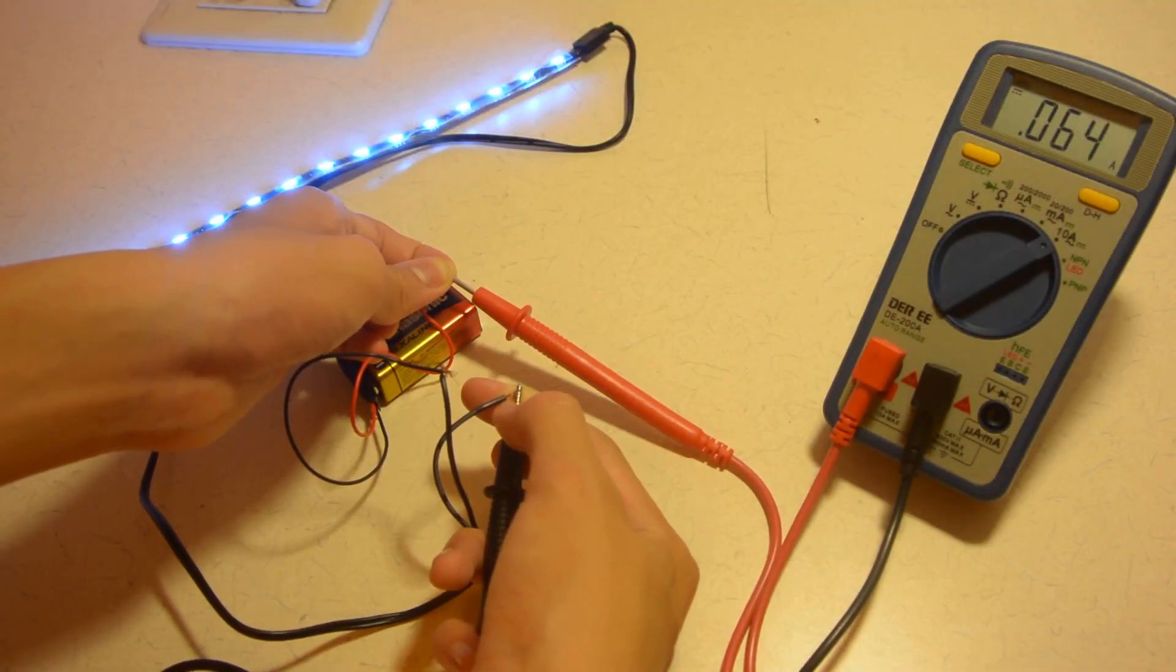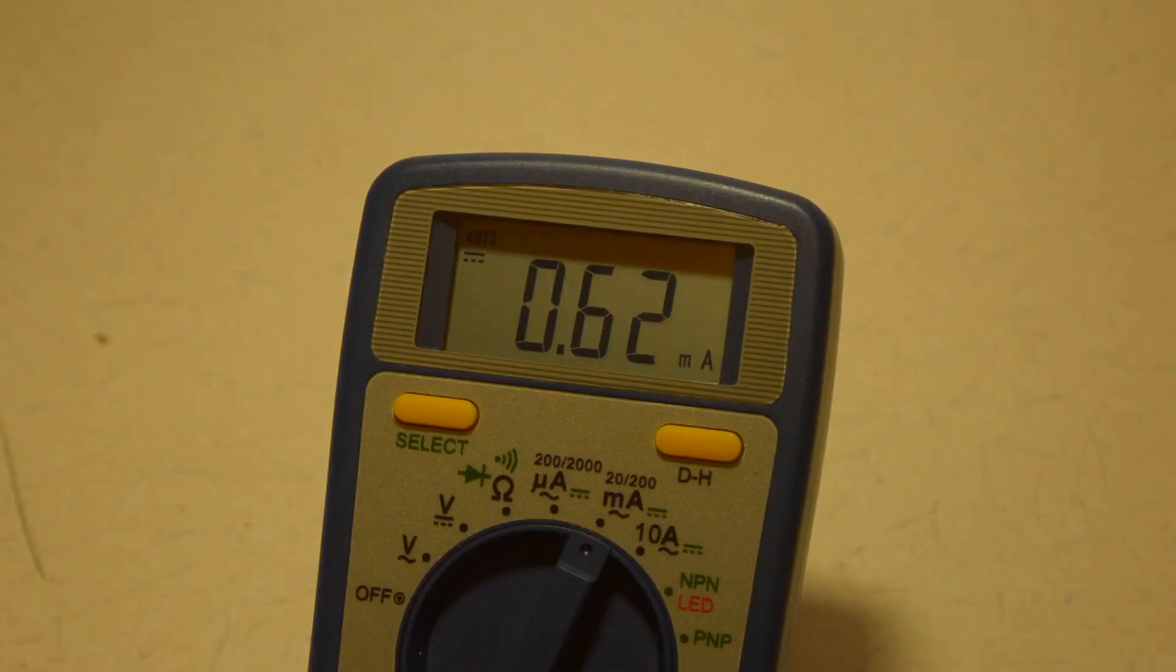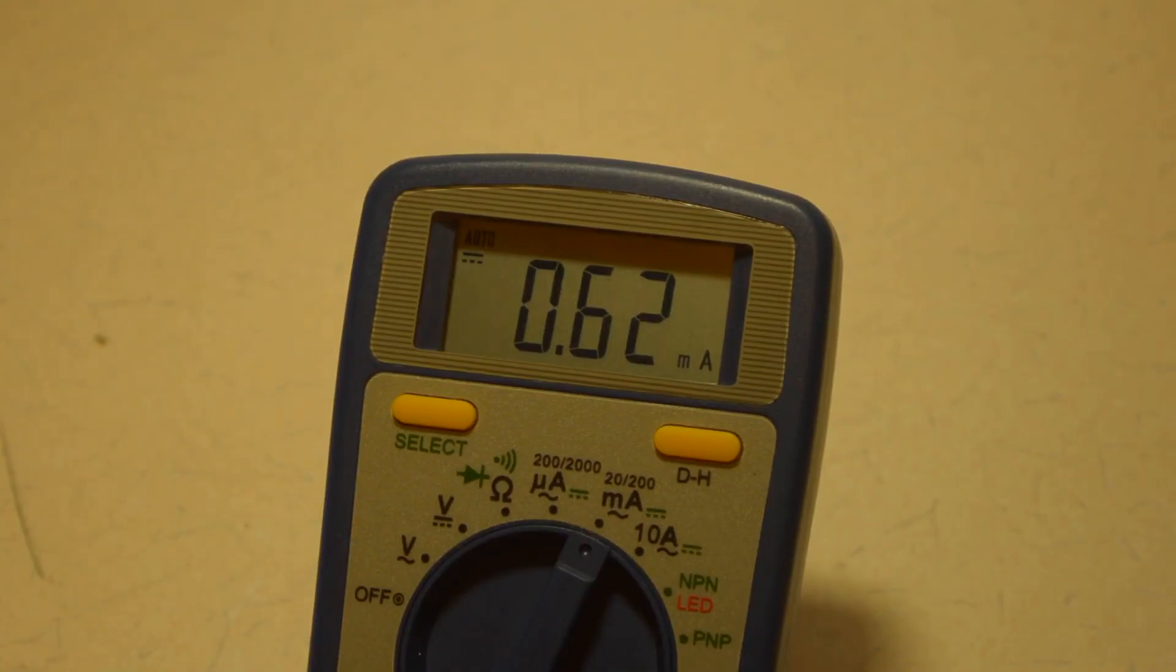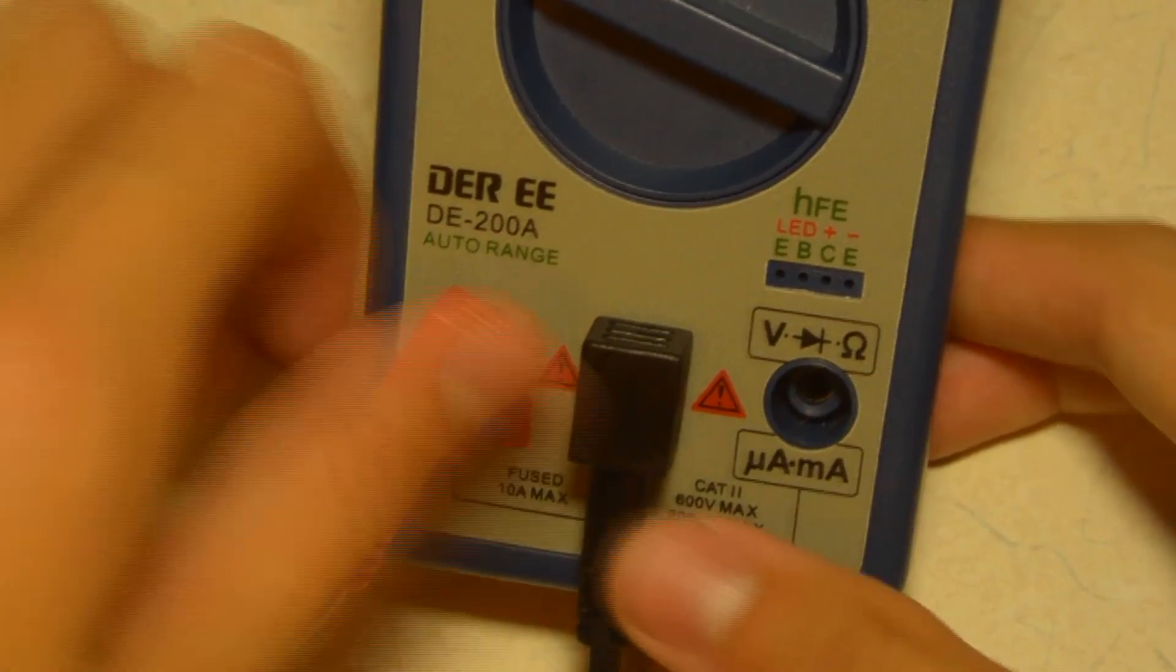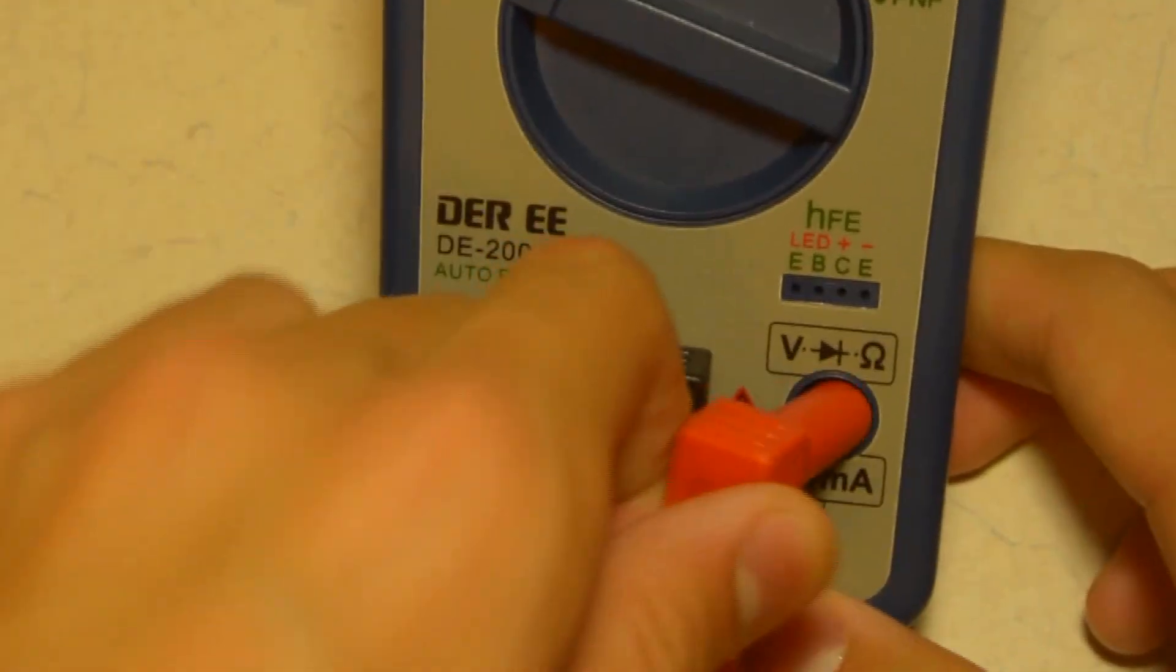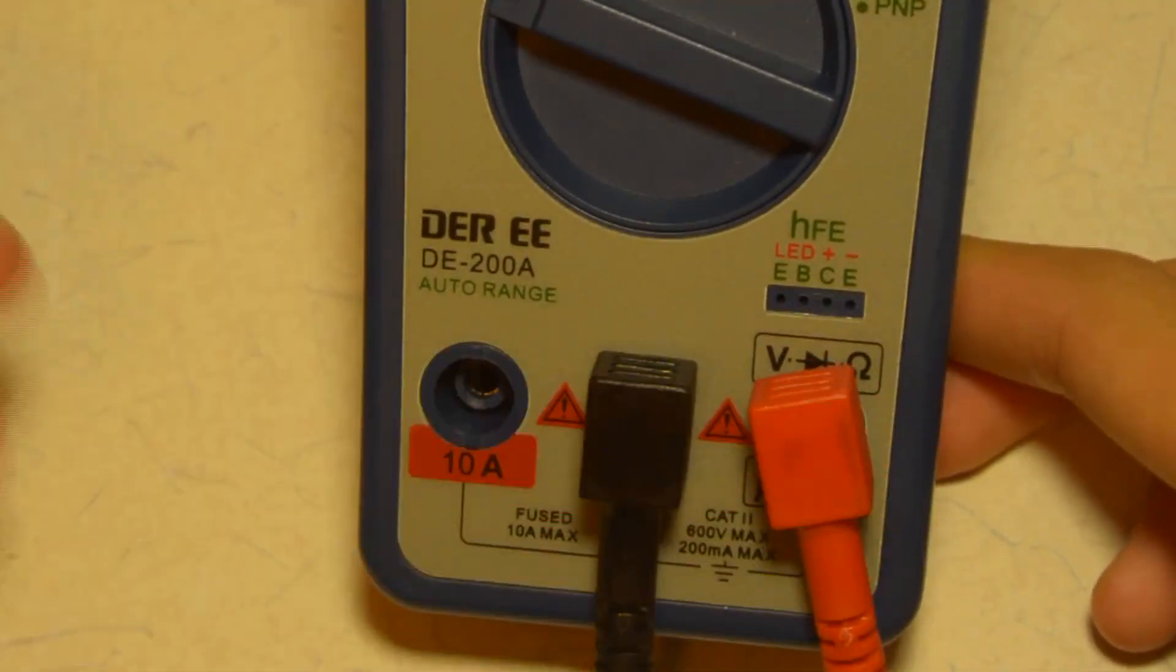It will then tell me the current the LED strip is using and if the current measured is less than 200 milliamp, then you can plug the positive lead into the port labeled mA 200 milliamps max. And that is it. Have fun measuring DC current.